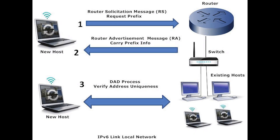IPv6 networks use stateless address auto-configuration, SLAAC, to assign IP addresses. With stateless address auto-configuration, devices send the router a request for a network prefix, and the device then uses the prefix along with its own MAC address to create an IP address.